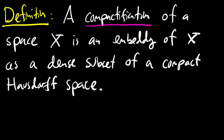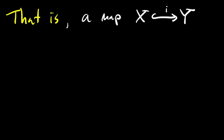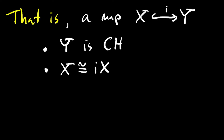That is, a compactification of X is a map, call it i, a continuous injection from X into a space Y, where Y is compact and Hausdorff, i is an embedding — so that means X is isomorphic to its image with the subspace topology, equivalently X has the smallest topology making the map i continuous — and lastly, the closure of X is all of Y.